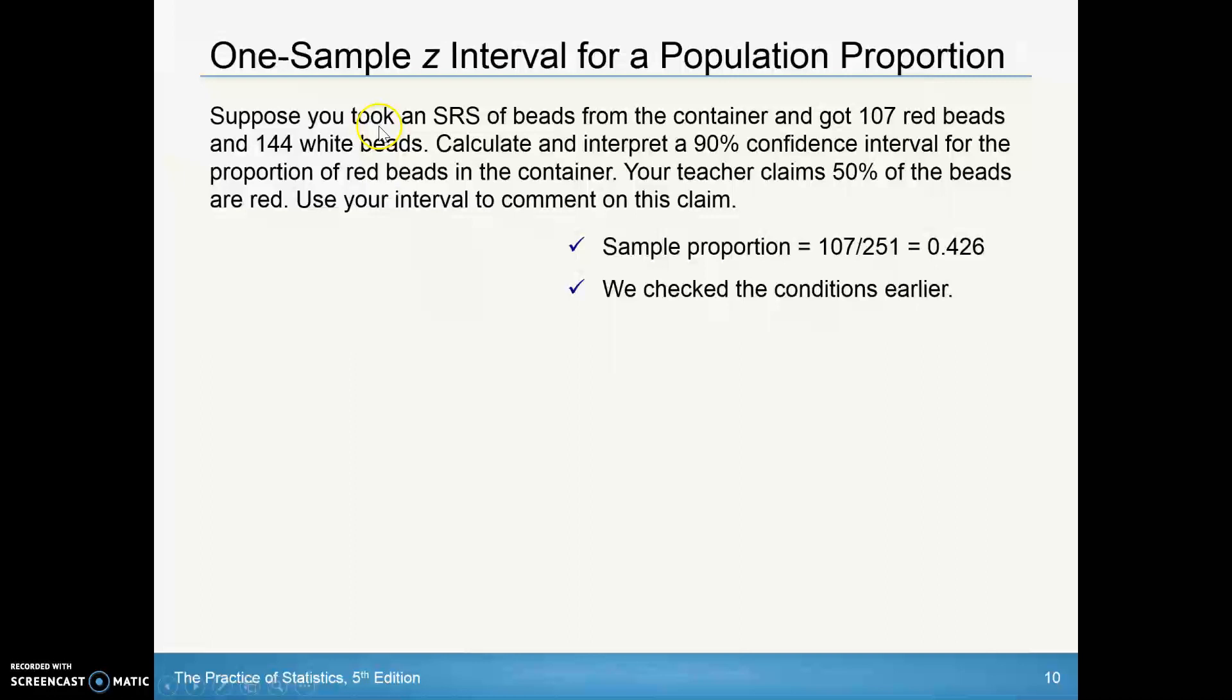Let's go back to a problem here. Suppose you took an SRS of beads from the container and got 107 red beads and 144 white beads. You want to calculate and then interpret a 90% confidence interval for the proportion of red beads in the container. Now, your teacher claims that 50% of the beads are red. Use your interval to comment on this claim. Well, our sample proportion, we did this earlier, we've got 107 red beads, 144 white beads. Totally, that's 251. We've got 107 out of totally 251. That is a sample proportion, a p hat of 0.426.